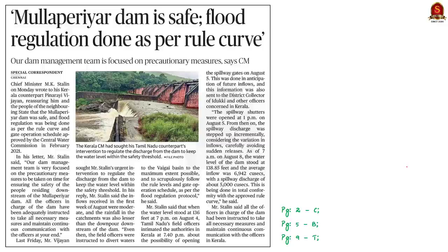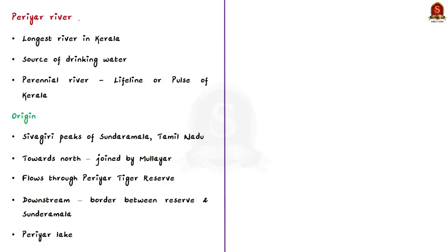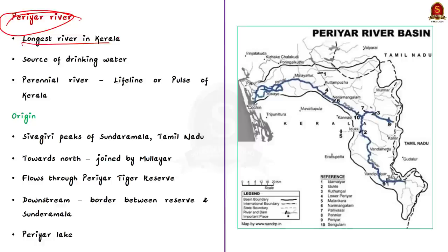This news article says that Tamil Nadu's chief minister wrote to his Kerala counterpart reassuring him that the Mullai Periyar dam was safe, and flood regulation was being done as per the rule curve approved by the Central Water Commission in February 2021. In this context, let us understand about the location of the dam and some important details about the Periyar River. Periyar River is the longest river in Kerala and has the largest discharge potential. It is the source of drinking water for towns and cities in Kerala and is known as the lifeline of Kerala.